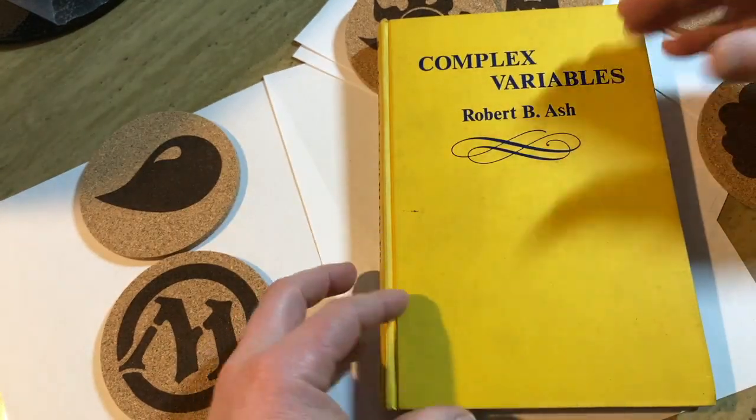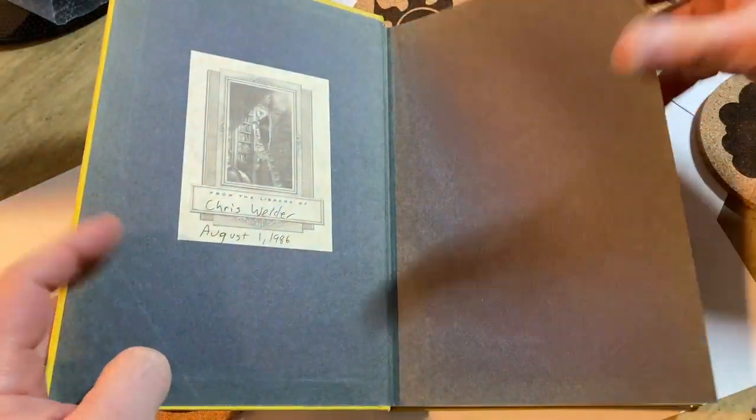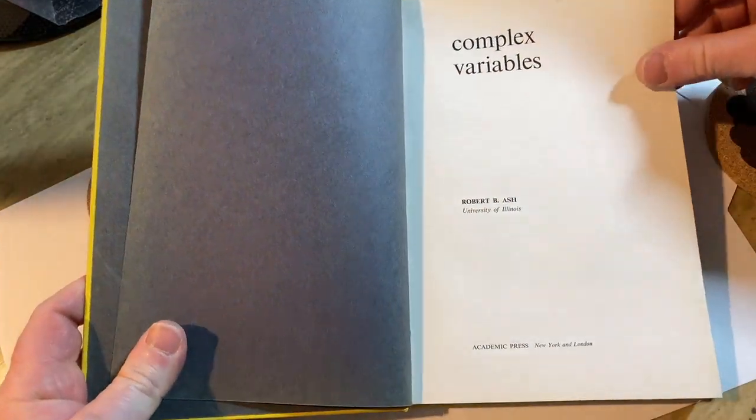This is a great math book. It is not a book for beginners, if you're curious. It is a much more advanced book on complex variables. Robert B. Ash, University of Illinois. It's a legend.